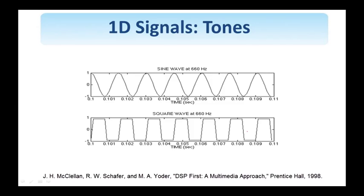Tones are examples of one-dimensional signals. On top you see a sine wave that only has one frequency present at 660 Hz — that's why it's called a pure tone. Let us listen to that. At the bottom you see a square wave. It also has the frequency at 660 Hz; however, it has additional frequencies — the so-called harmonics. Let's listen to that as well. The square wave is richer in the sense of having additional frequencies than the pure tone, the sinusoid.